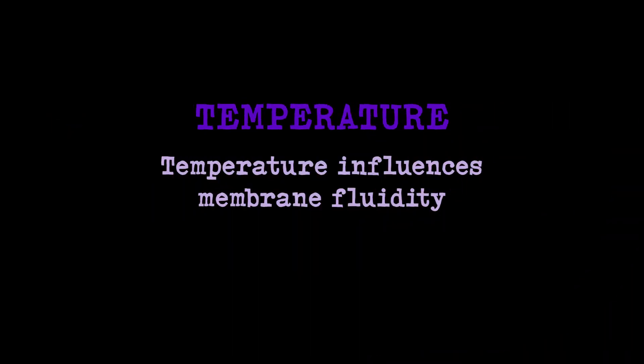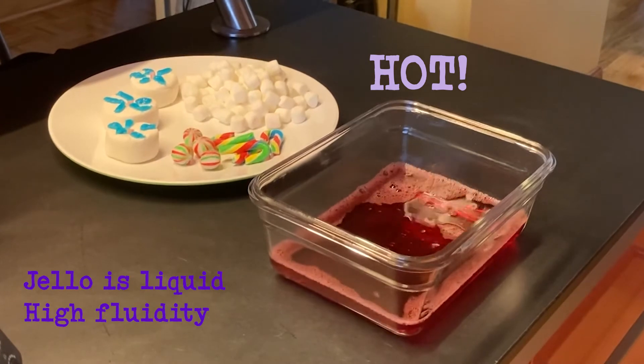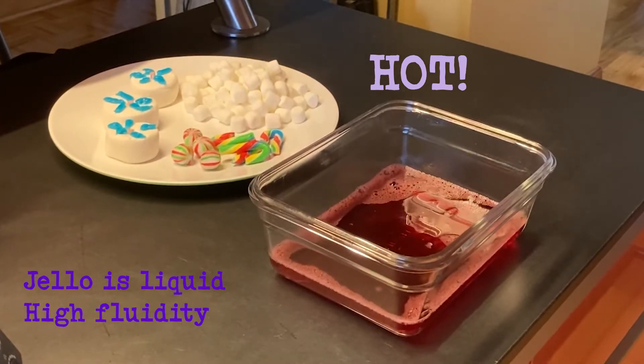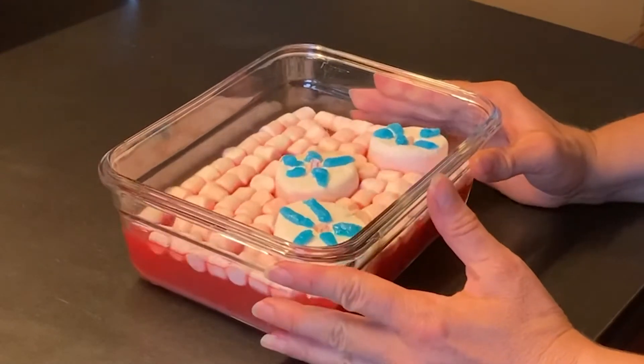Temperature has a significant influence on fluidity because it increases motion. The higher the temperature, the easier the movement and the more fluid the membrane is. You can picture this easily with this jello pan. Here at a slightly higher temperature it is very fluid.